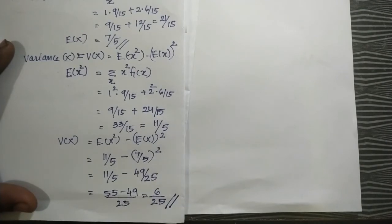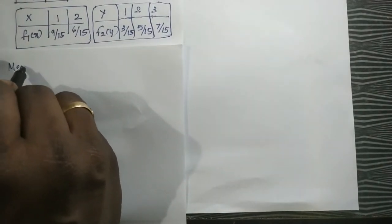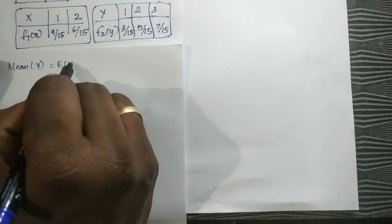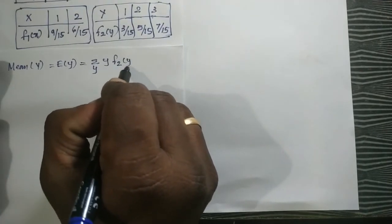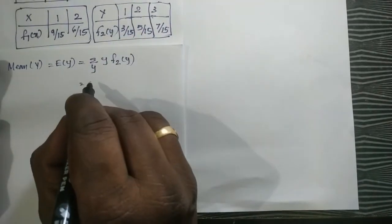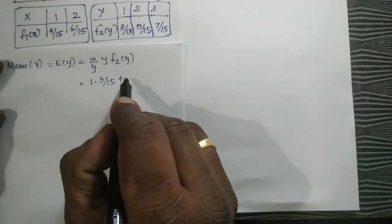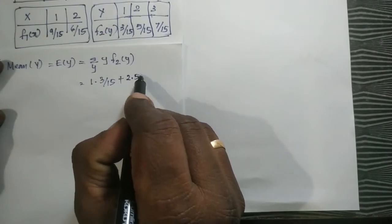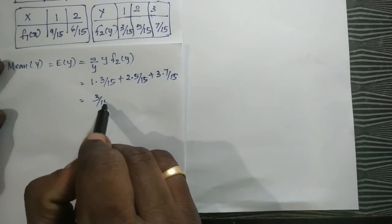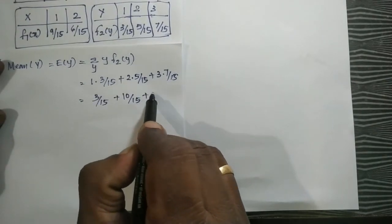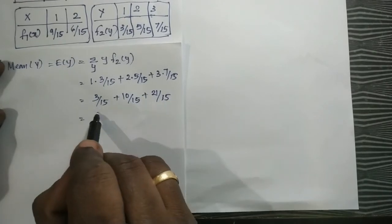For the mean of Y, we will find E(Y), which equals the expectation of Y, using sigma over y of y times f2(y). Y takes values 1, 2, 3: 1 times 3 by 15, plus 2 times 5 by 15, plus 3 times 7 by 15. This gives 21 by 15, which simplifies to 34 by 15.